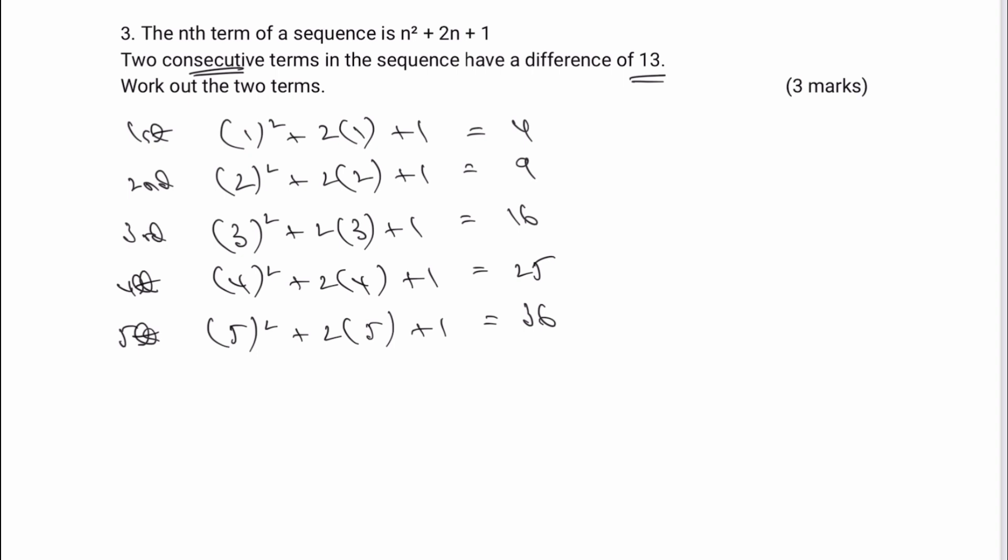Now the difference between the fourth and the fifth is 11. So I'm hopeful that the sixth term, which I'm going to write now, is going to be a difference of 13 between the fifth and the sixth. And I've got that plus 1, that equals 49, which, guess what, is a difference of 13.